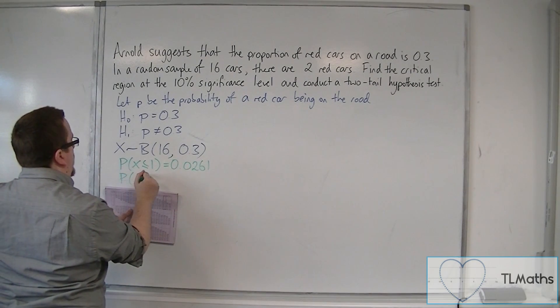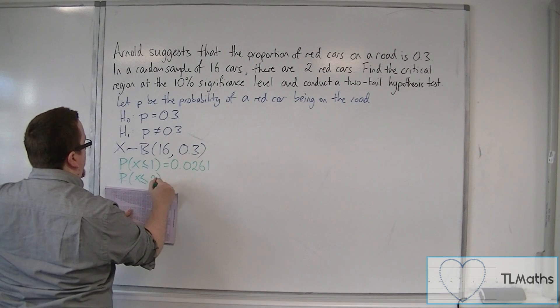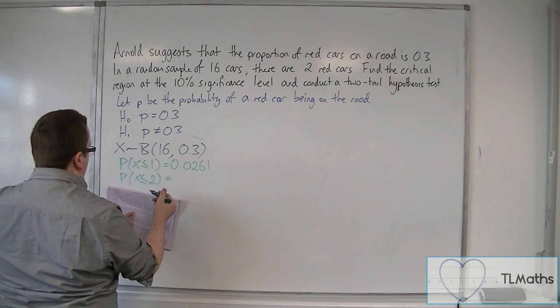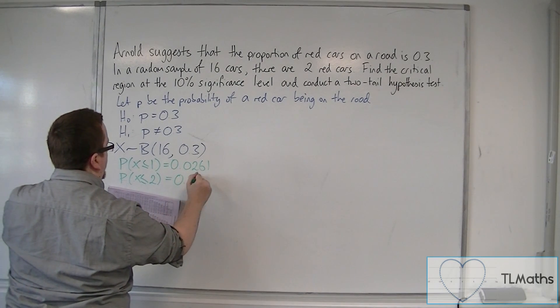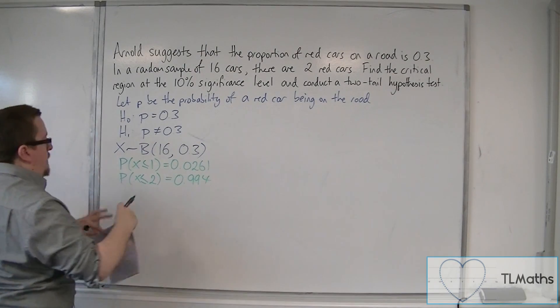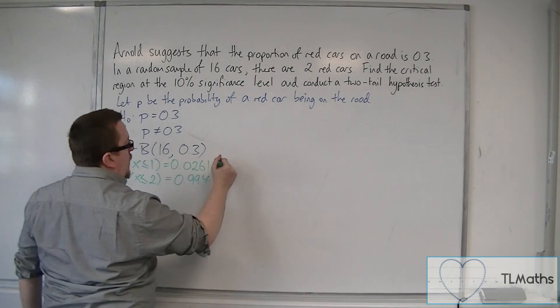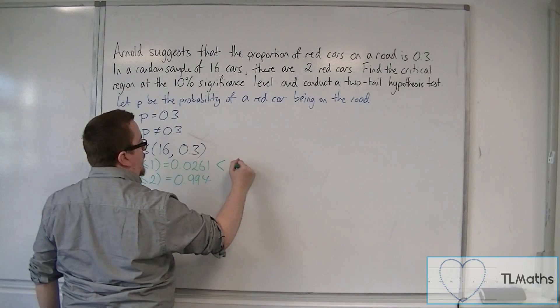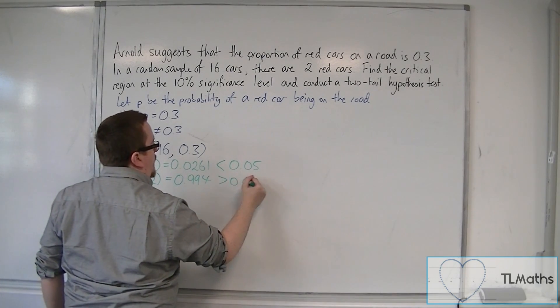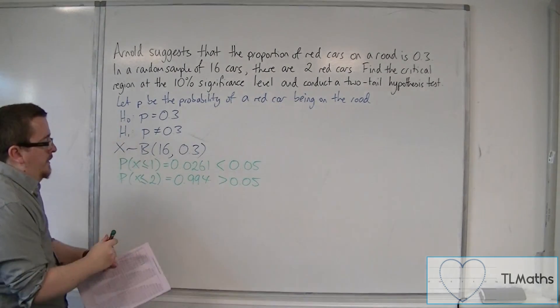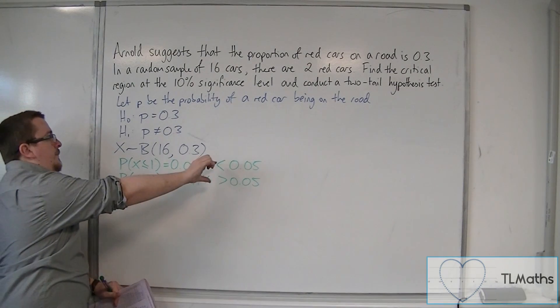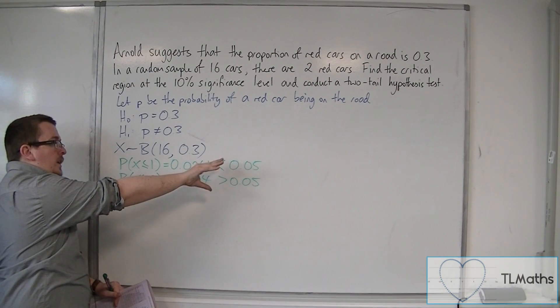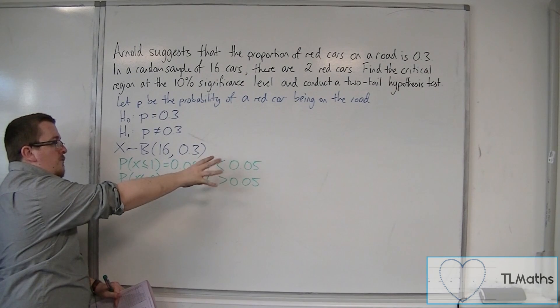And the probability of X being less than or equal to 2 is equal to 0.0994. As you can see, one of these is less than 5%, and one of these is greater than 5%. So we found our crossover right there.